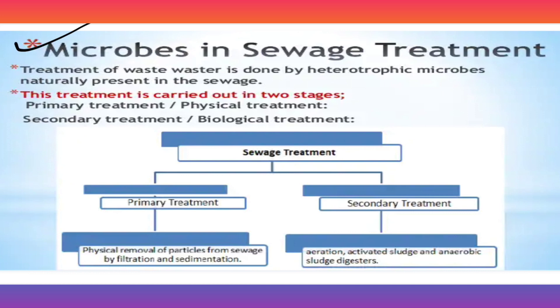Microbes in sewage/waste water treatment — treatment of waste water is done by heterotrophic microbes naturally present in the sewage. This treatment is carried out in two stages: the first is primary treatment and the second is secondary treatment.